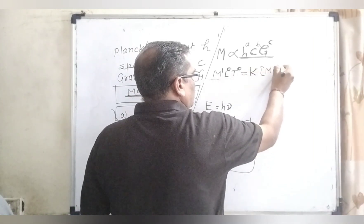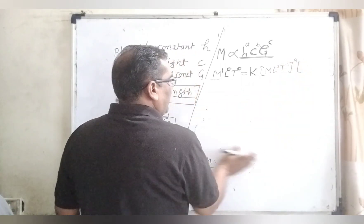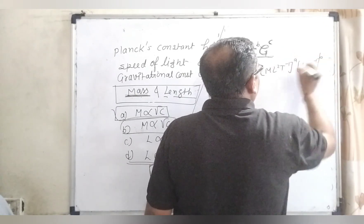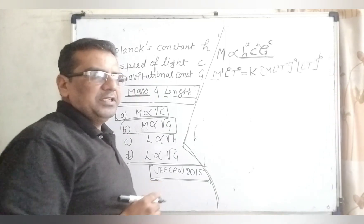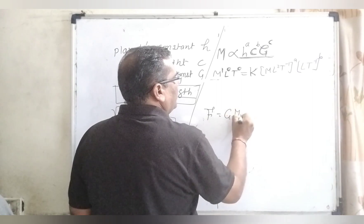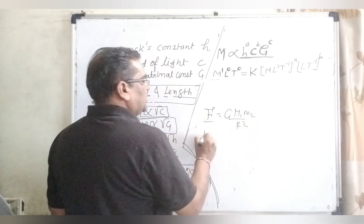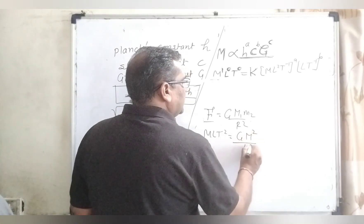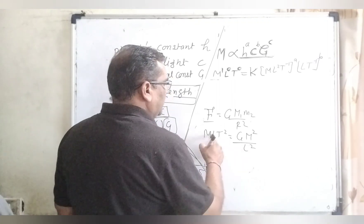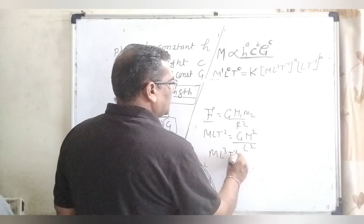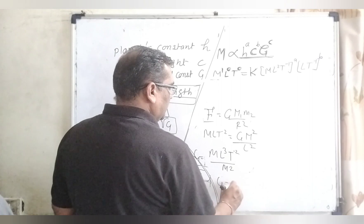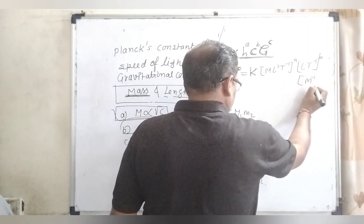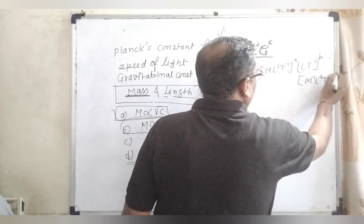So M equals K times [M L² T⁻¹]^A for Planck's constant. The dimension formula of speed of light is simply that of velocity: [L T⁻¹]^B. For the universal gravitational constant, using F = G M₁M₂ / L²: force is M L T⁻², so G = M⁻¹ L³ T⁻². Substituting, G gives [M⁻¹ L³ T⁻²]^C.